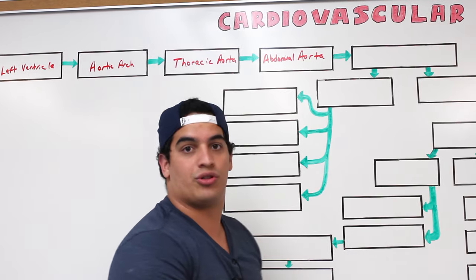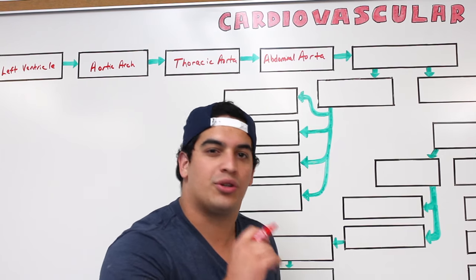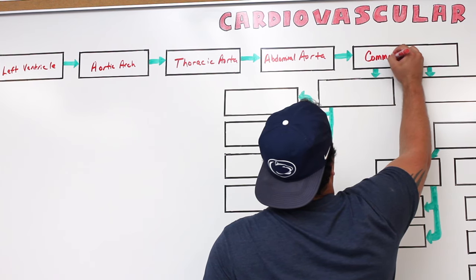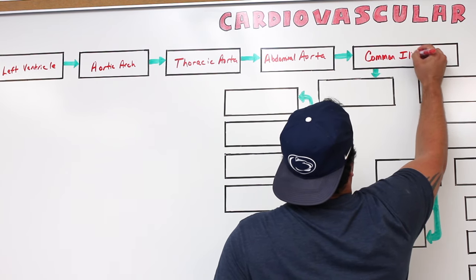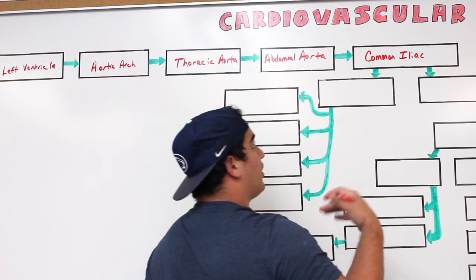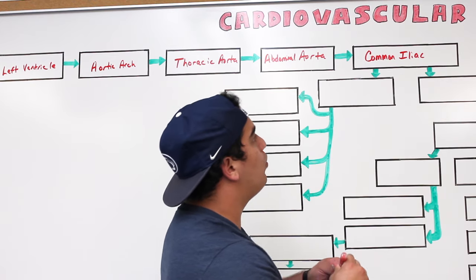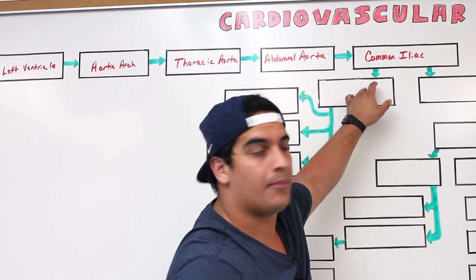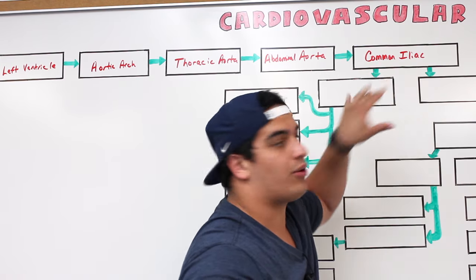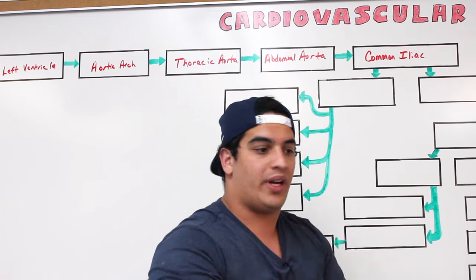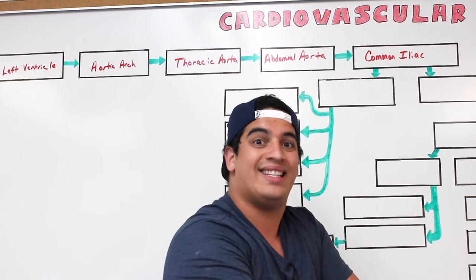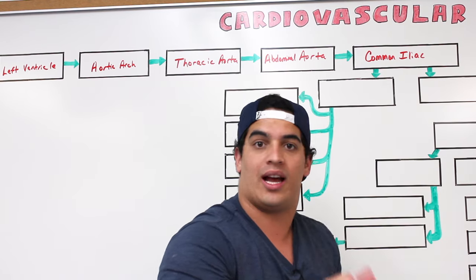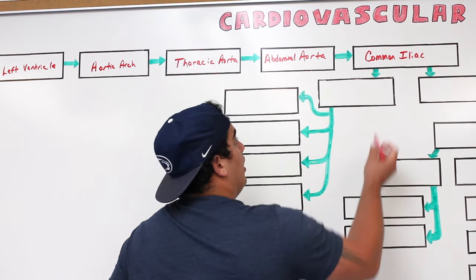From the abdominal aorta, the blood goes into a really important structure called the common iliac artery. The abdominal aorta gives off two branches — a right common iliac and a left common iliac. We're treating it as one general structure here, but just be aware that both sides exist.